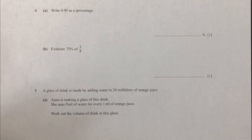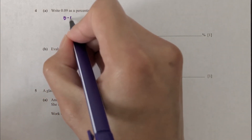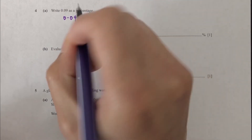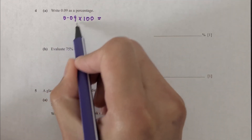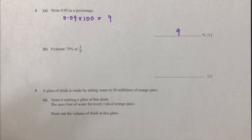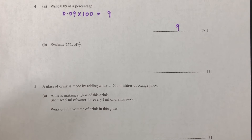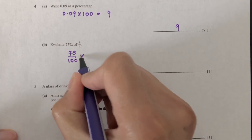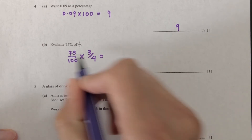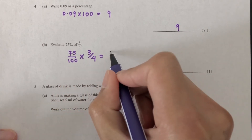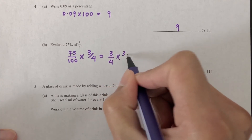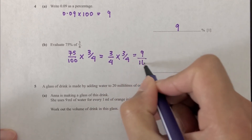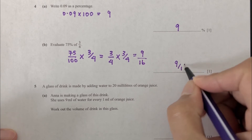Question number 4: write 0.09 as a percentage. You just have to multiply by 100 — move two decimal places — so it's 9%. For part B, evaluate 75% of three quarters. That means 75 over 100 times 3 over 4, and 75 over 100 simplifies to 3 over 4, so it's 3 over 4 times 3 over 4, which is 9 over 16.